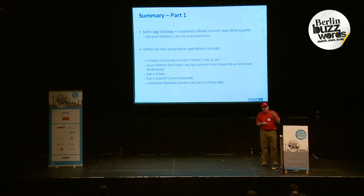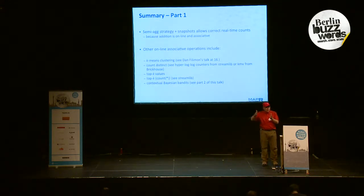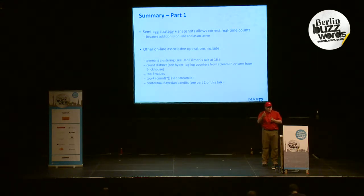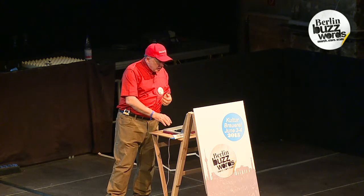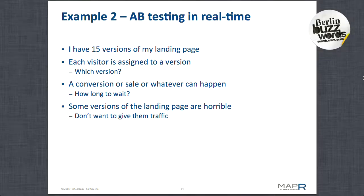Each semi-aggregate is stored in a separate location — the semi-aggregate for ten minutes ago is stored in that location, the semi-aggregate for five minutes in a different location. Every semi-aggregate is stored in its own place. They're not overriding — they're appending. So, can we do something more interesting than counting? Counting is kind of boring. People can do count unique and things like that. But what about A-B testing? Or what about contextual learning, which allows very advanced targeting operations?